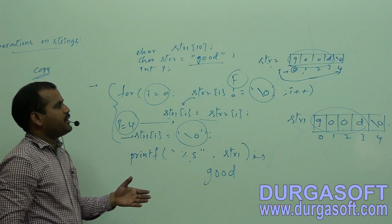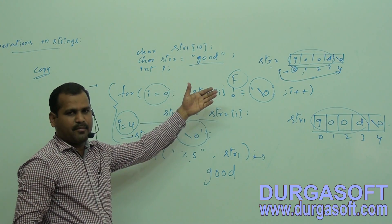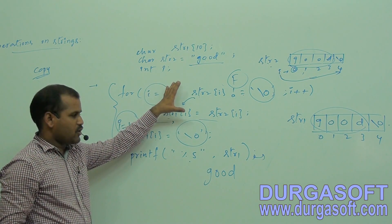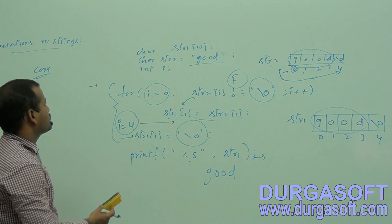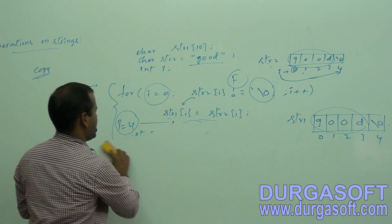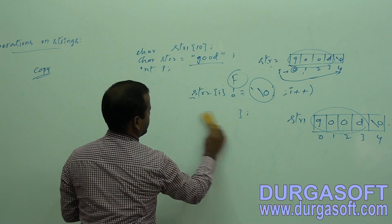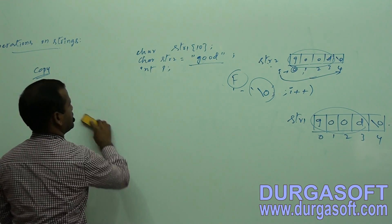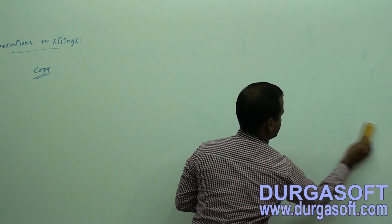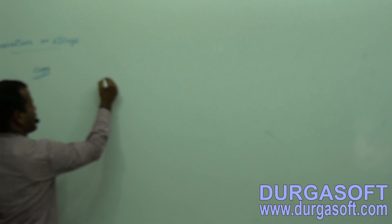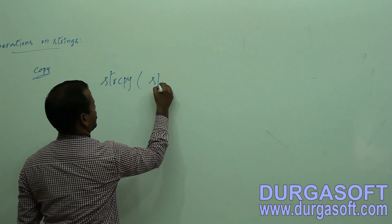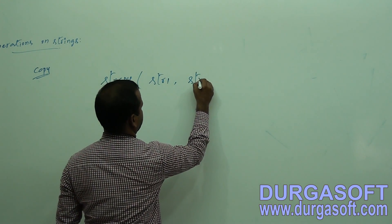We can copy one string into another — whether empty or already existing — using this for loop and program segment code. Alternatively, we can perform this operation using a built-in function: strcpy. It is spelled S-T-R-C-P-Y and takes two parameters.